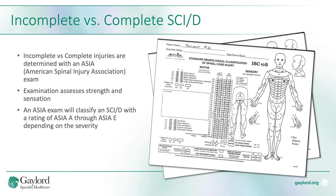Whether you have a complete or incomplete spinal cord injury is determined with the completion of a neurological exam referred to as an ASIA exam. An ASIA exam assesses both your strength and your sensation to determine the nature of your spinal cord injury. The ASIA exam will classify an injury as either ASIA A, B, C, D, or E.